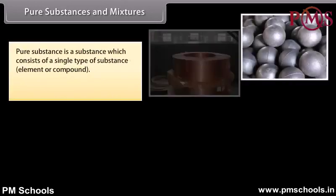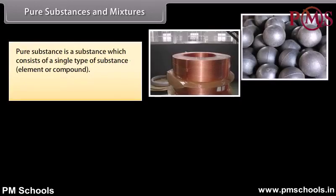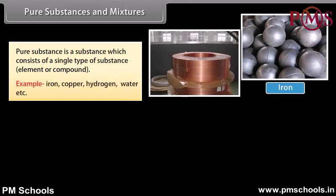A pure substance is a substance which consists of a single type of substance — either an element or a compound. Examples include iron, copper, hydrogen, water, etc.